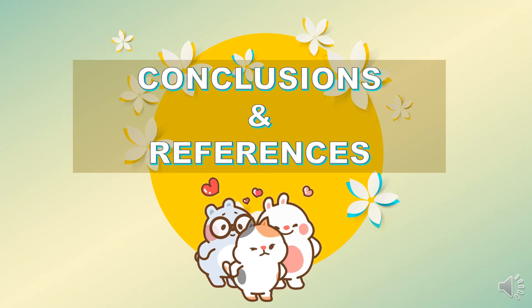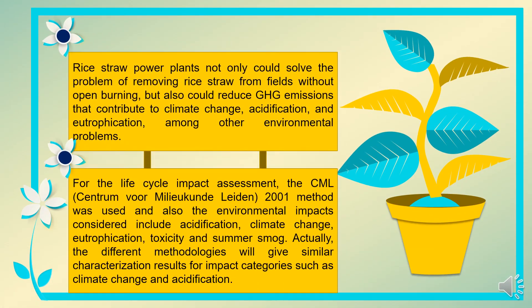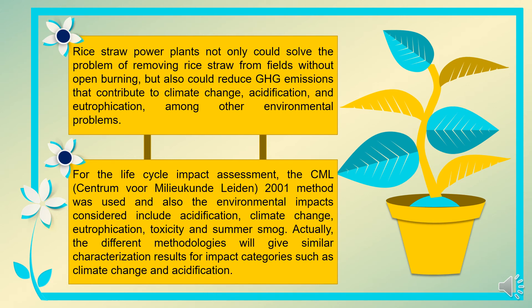For the last part in this video is the conclusion and references. In conclusion, rice straw power plants not only could solve the problem of removing rice straw from fields without open burning, but also could reduce GHG emissions that contribute to climate change, acidification, eutrophication, and other environmental problems. For the life cycle impact assessment, the CML (Centrum voor Milieuwetenschappen Leiden) 2001 method was used, and the environmental impacts considered include acidification, climate change, eutrophication, toxicity, and summer smog. Different methodologies will give similar characterization results for impact categories such as climate change and acidification.